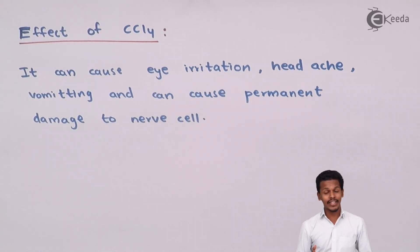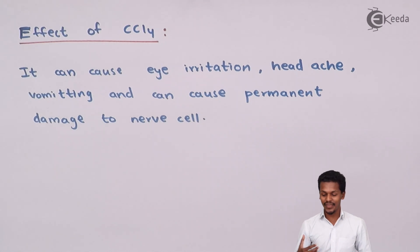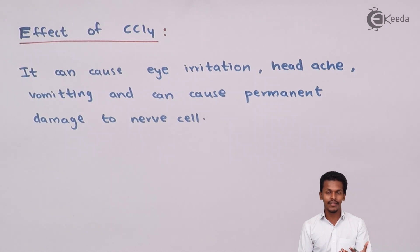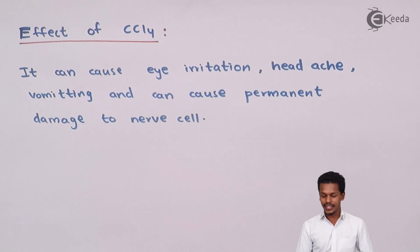The effects of CCl₄ are as follows: it can cause eye irritation, headache, vomiting, and permanent damage to the nervous cells. This indicates the hazardous effects on the human body if it is not handled wisely. CCl₄ is useful in pharmaceutical industries, but direct contact with the human body will adversely affect health. Therefore, certain precautions are required when handling this chemical.